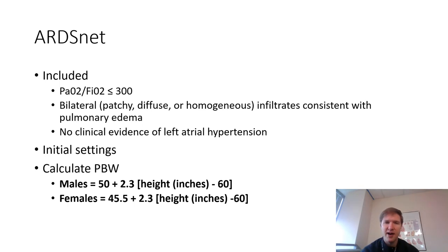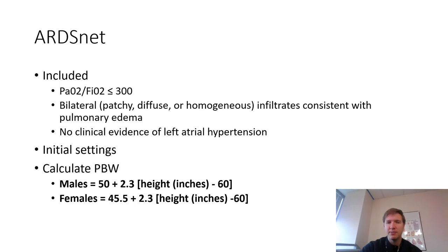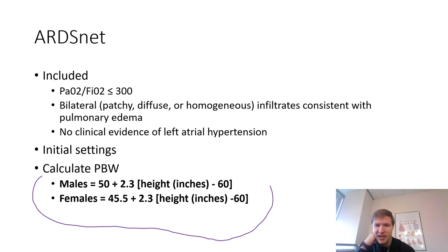The ARDSNet included patients with a PF ratio less than or equal to 300 with bilateral diffuse homogenous infiltrates on x-ray consistent with pulmonary edema, and no clinical evidence of left atrial hypertension — ruling out left-sided heart failure via echo or ultrasound. Initial settings use a predicted body weight calculation — males: 50 + 2.3 × (height in inches − 60); females: 45.5 + 2.3 × (height in inches − 60) — and tidal volumes are based on that predicted body weight.